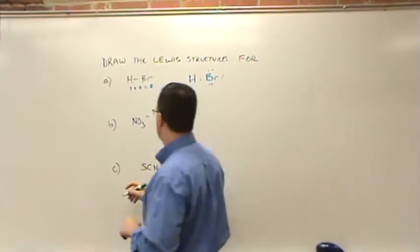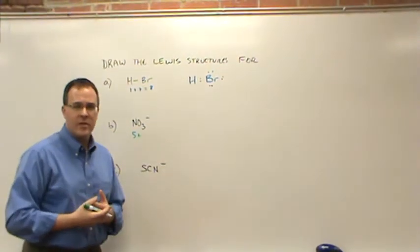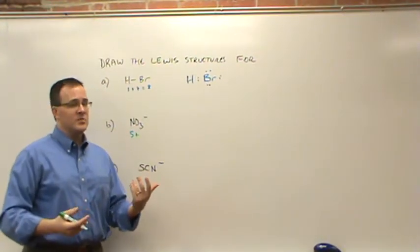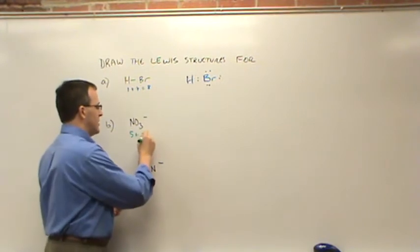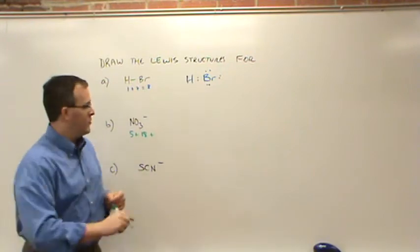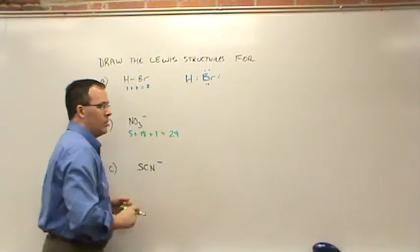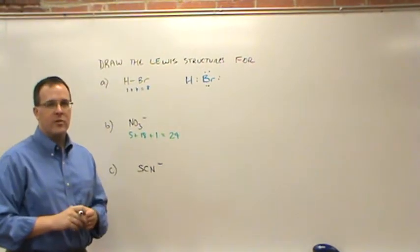So that's a five plus, and then oxygen is in column six, so it's got six. Six times three is eighteen. So it's five plus eighteen, but we've got a negative sign, and that negative sign means an extra electron. So we can add in one more. Five plus eighteen plus one is twenty-four. We've got twenty-four total electrons to deal with.